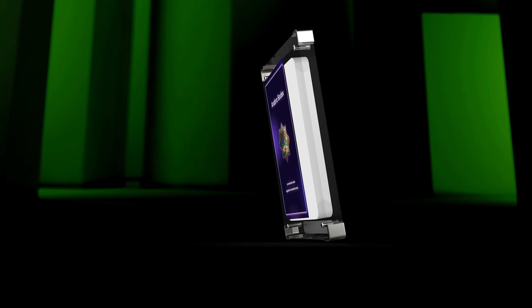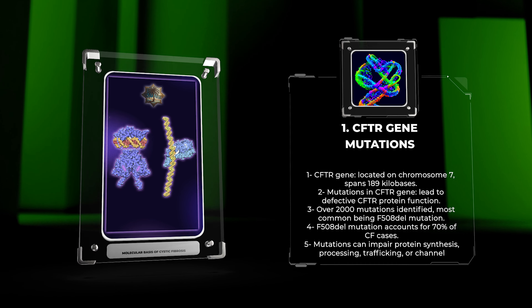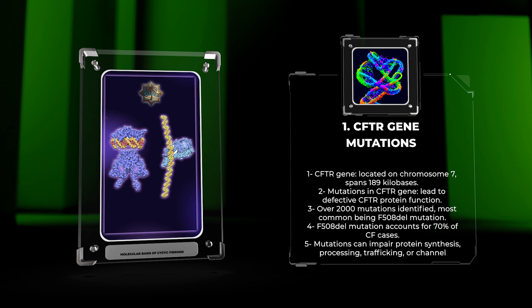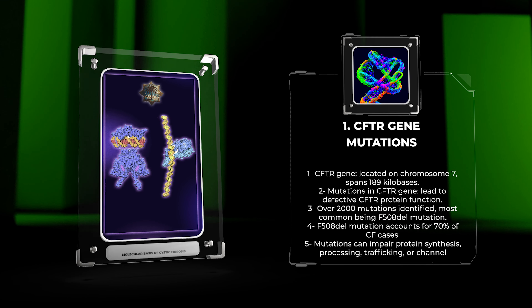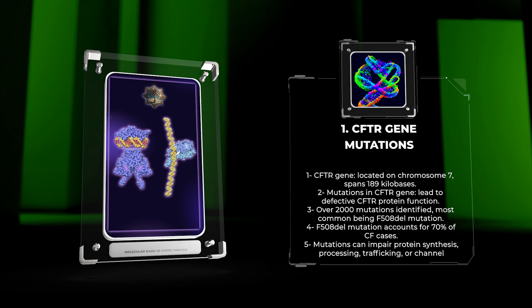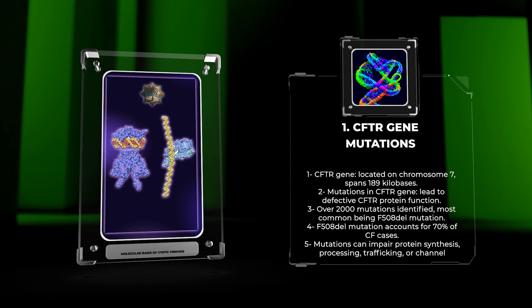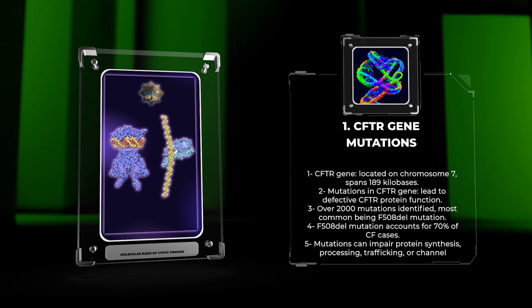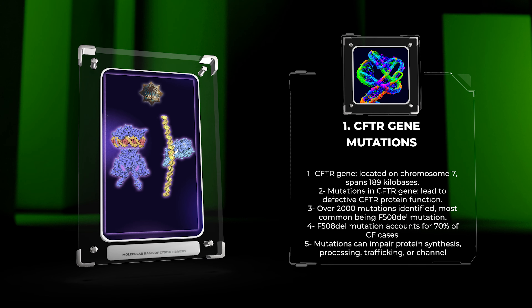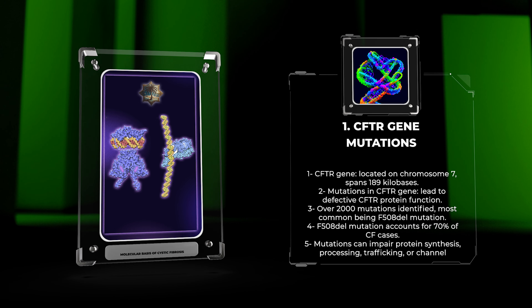The CFTR gene is located on chromosome 7 and spans approximately 189 kilobases. Mutations in this gene lead to defective CFTR protein function. Over 2,000 mutations have been identified, with the most common being the F508del mutation, accounting for around 70% of CF cases. These mutations can result in impaired protein synthesis, processing, trafficking, or channel function, ultimately leading to CF symptoms.